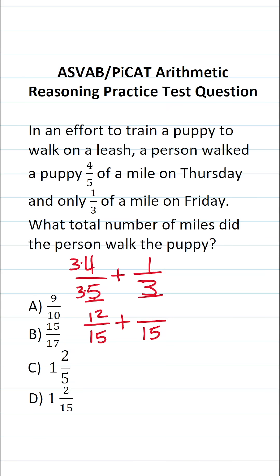To write three as 15, I would have to multiply it by five, and I also have to do that to its numerator. Three times five is 15, and one times five is five. Now that we have a common denominator, all we have to do is add our numerators.